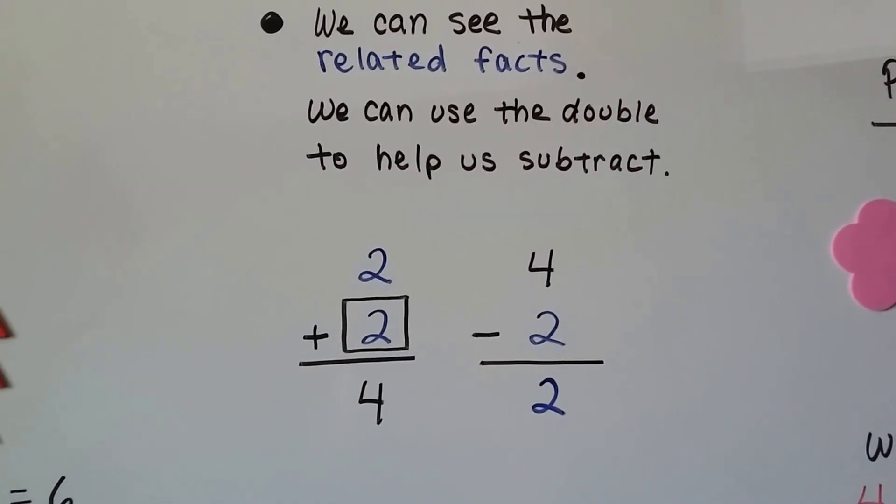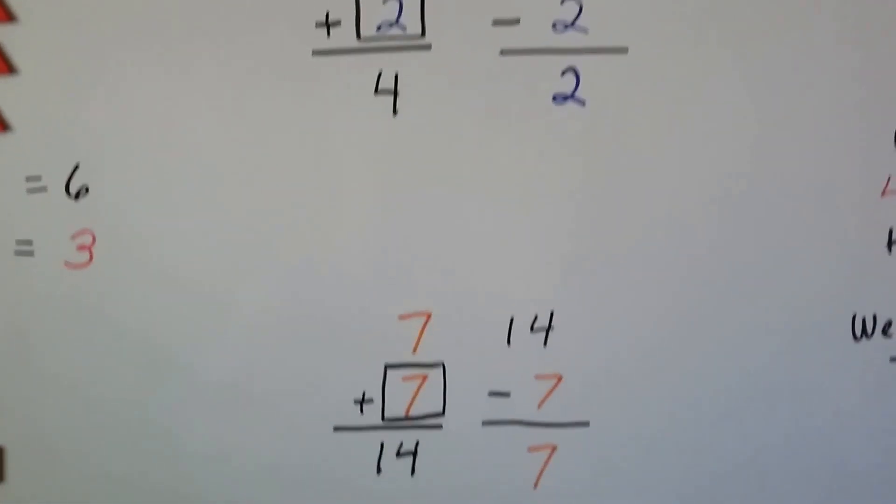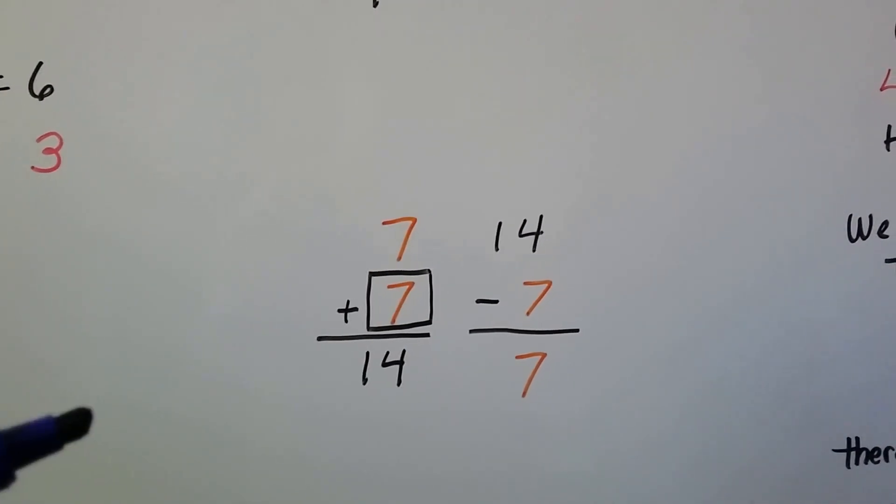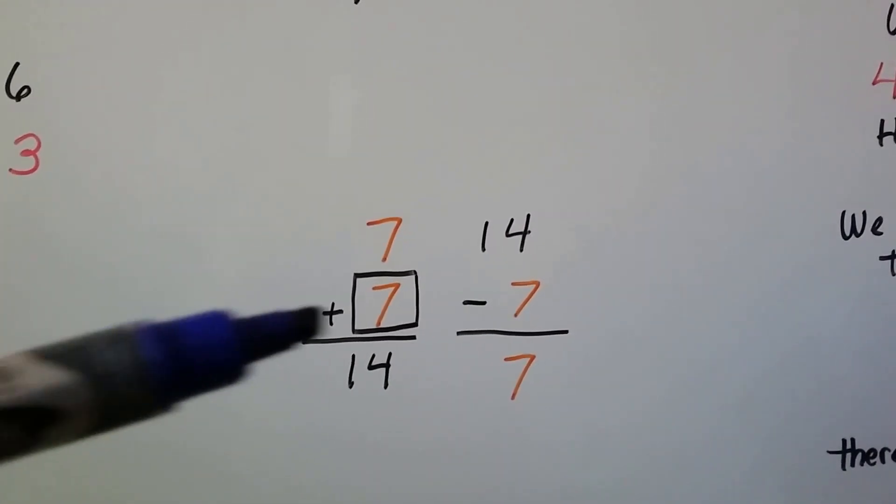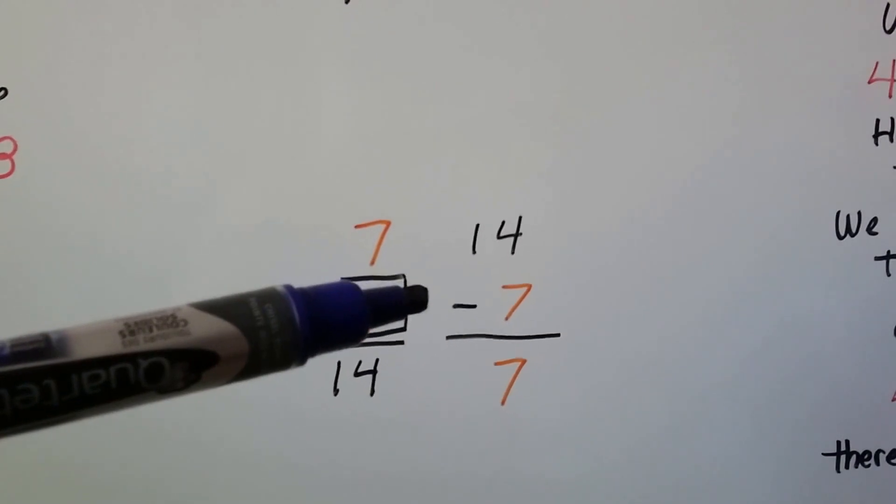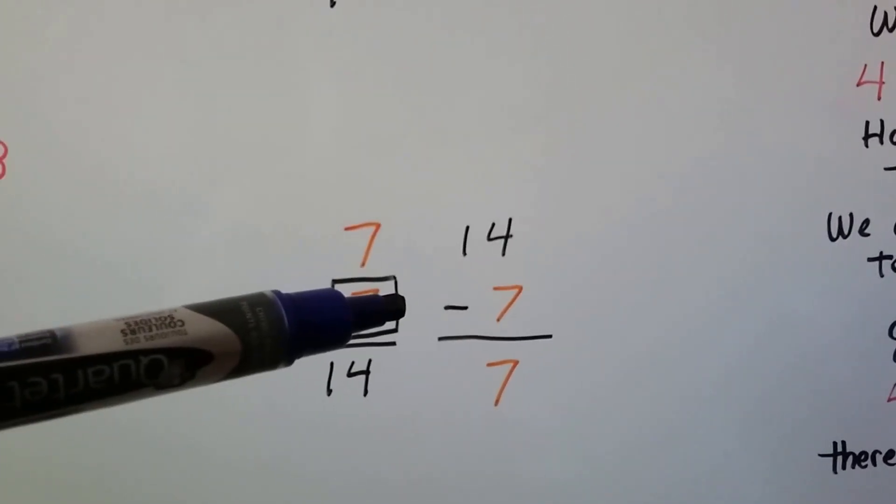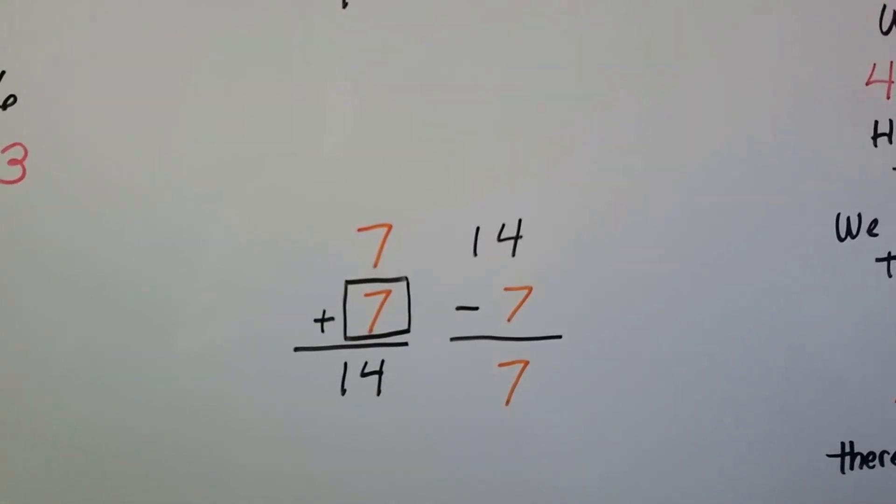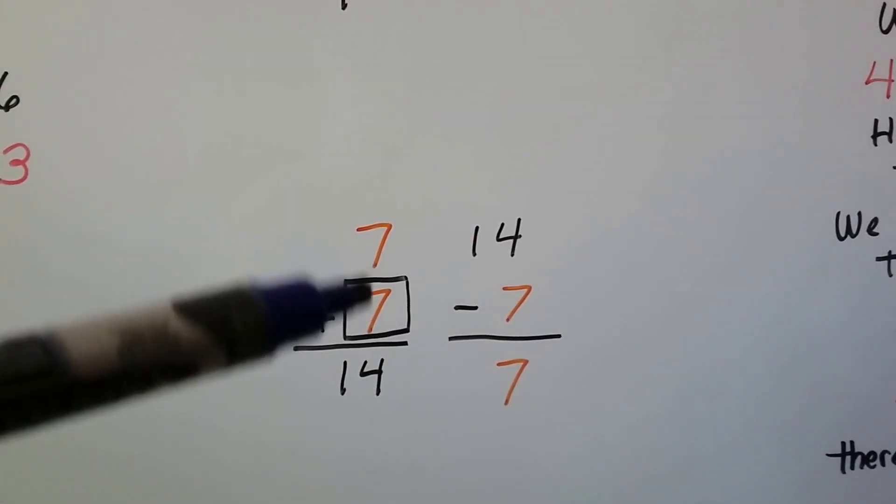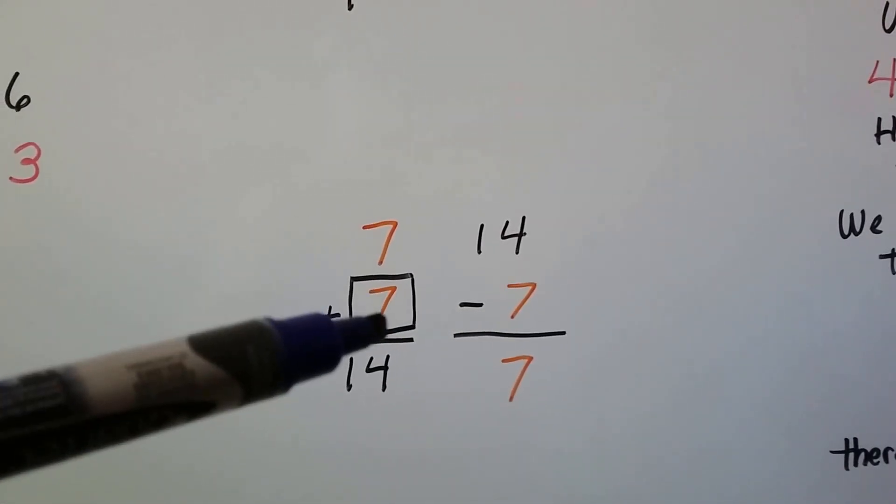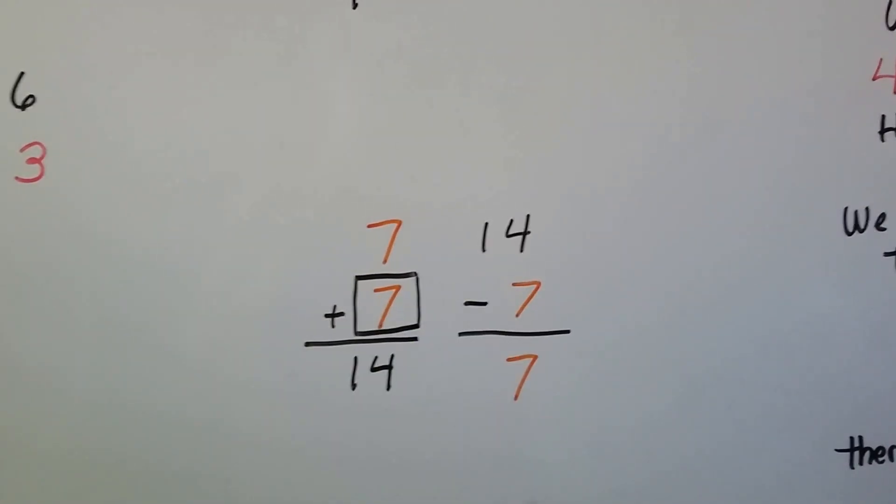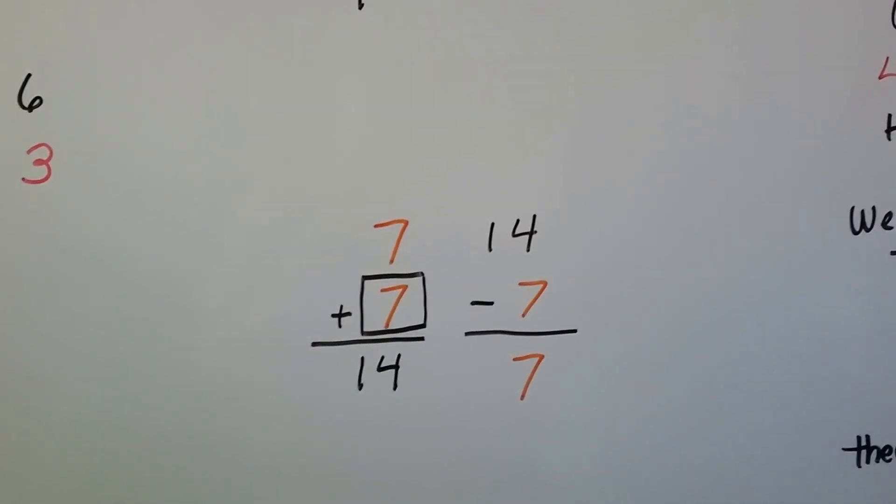7 plus 7 is 14. If this 7 were missing, we would be able to count up from this 7 to the 14 and put the 7 in there. But we know they're doubles, so we know the difference will be one of the doubles. It'll be a 7.